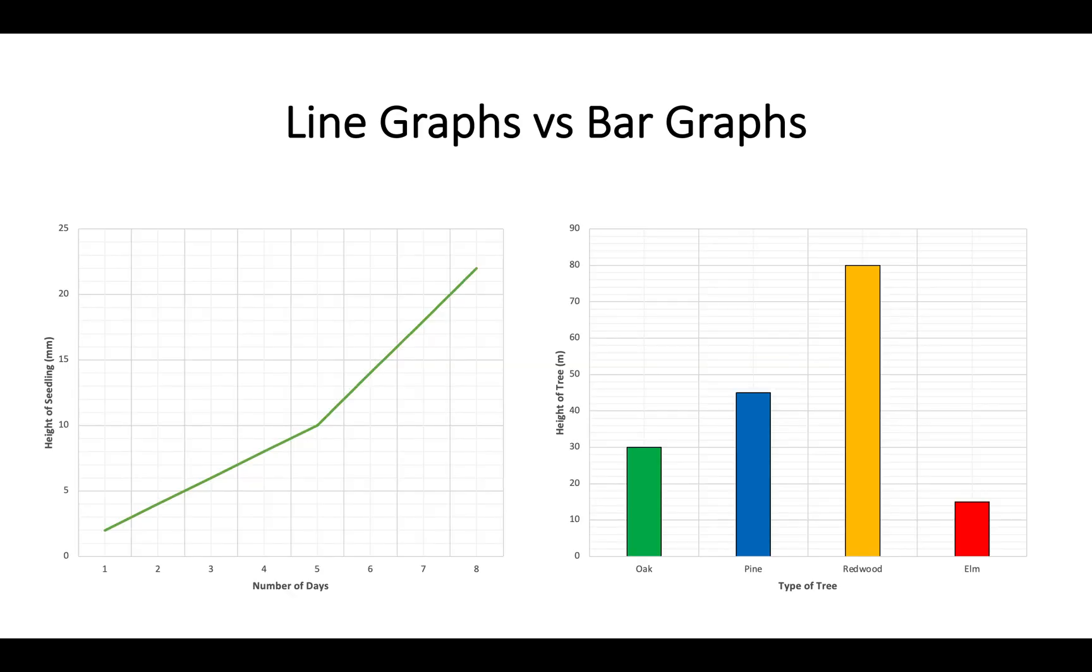To start off, you may have come across these before, but there are two main types of graphs that we look at in biology. First, there are line graphs, which are on the left here, and there are bar graphs. You can tell them apart straight away by the line graph having a line and the bar graph having bars on them. Let's go through the differences between them.